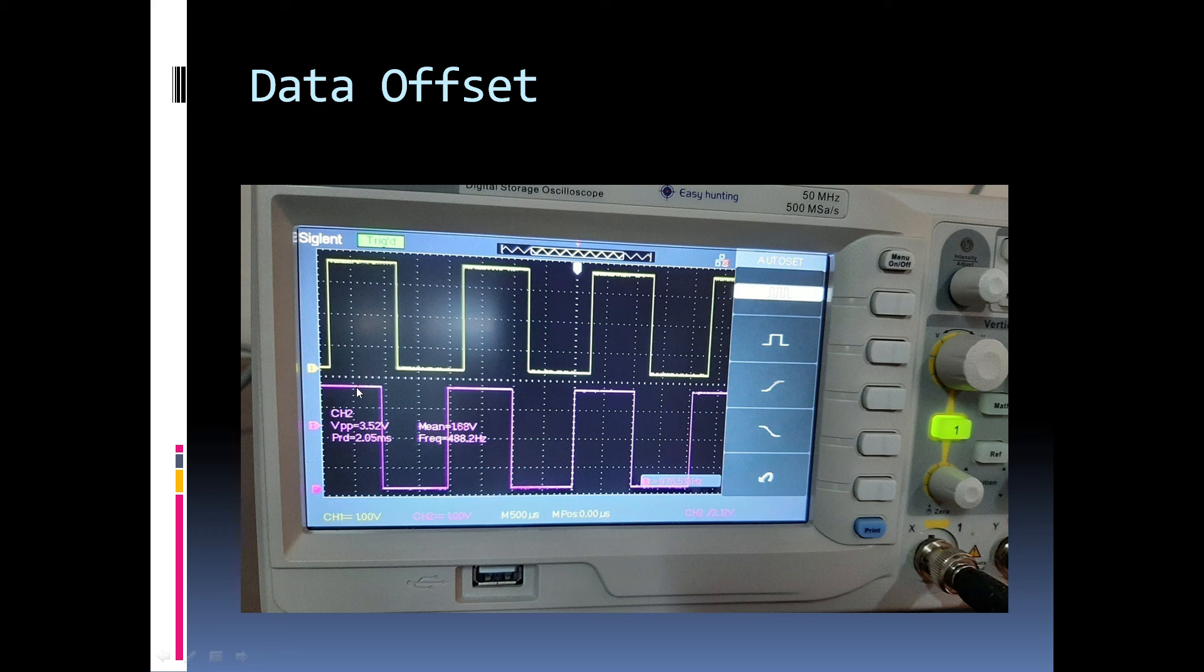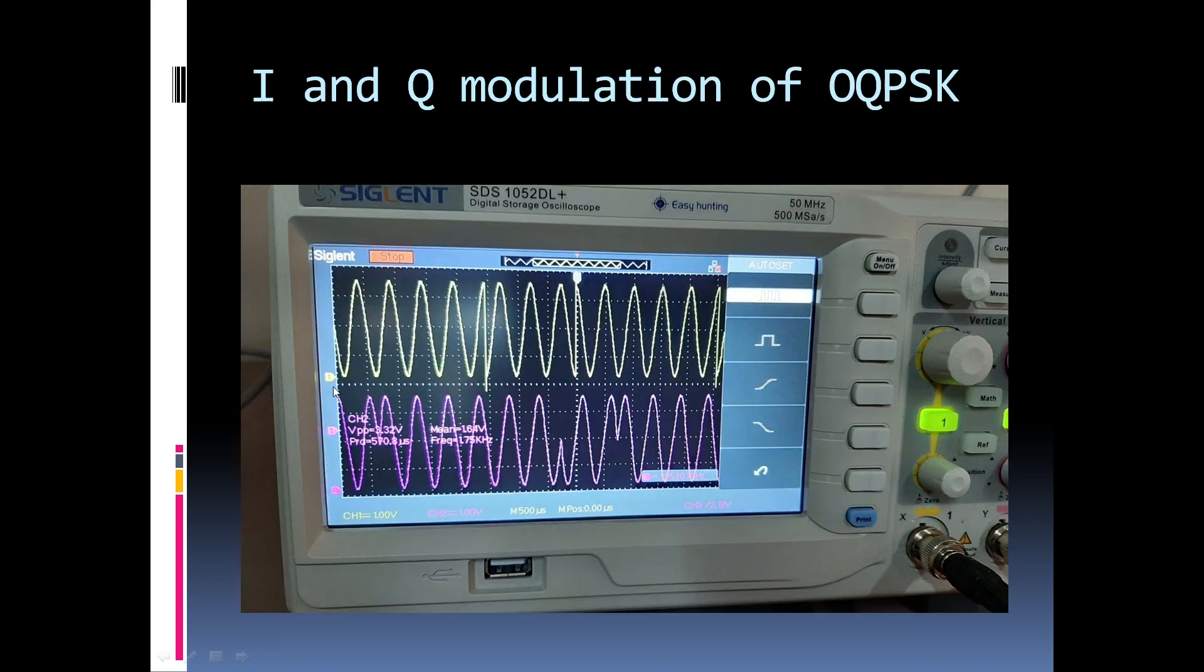So, this problem can be rectified by delaying the Q channel data by 1 bit period. And this delay or offset can be observed between the output and the input of the offset block on the board for this OQPSK segment. So, when we want to perform the OQPSK modulation, we need to delay the Q channel data by 1 bit period. Now, here we can see the I and Q channel data and we can see that the two cannot change during the same bit period because this is OQPSK.